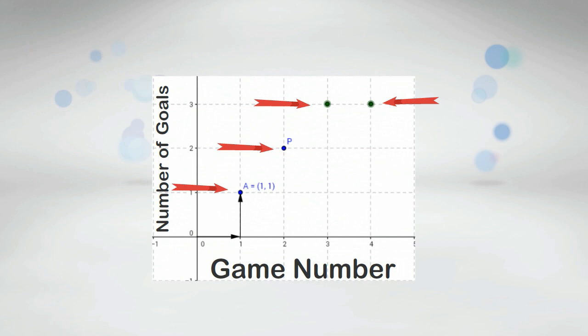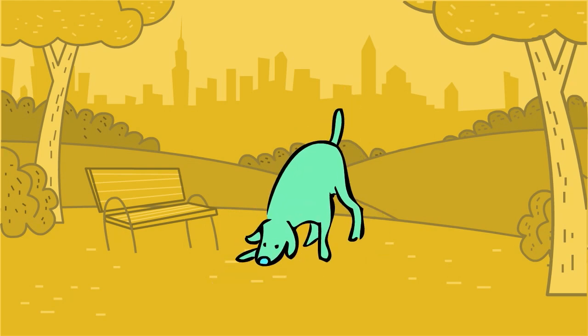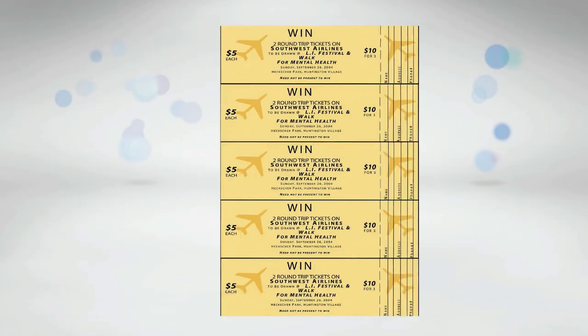Some examples of discrete data would be the number of dogs, number of people, the number of tickets you have for a show.